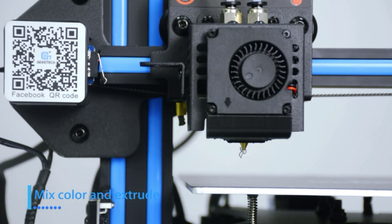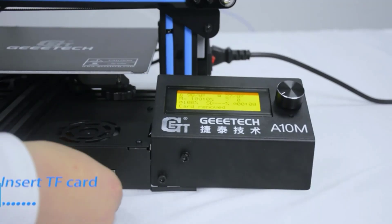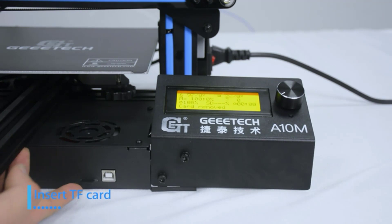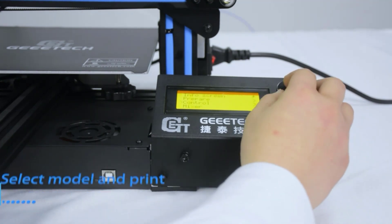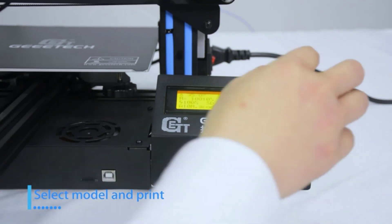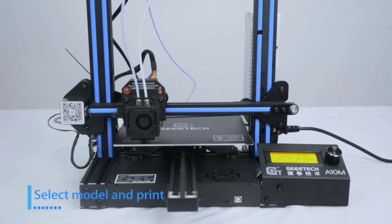With the A10M your whole model can be printed in whatever color you fancy. For example, you can mix red and white in a certain ratio to make yellow. So with just two colored filaments, you can create a whole range of colors.